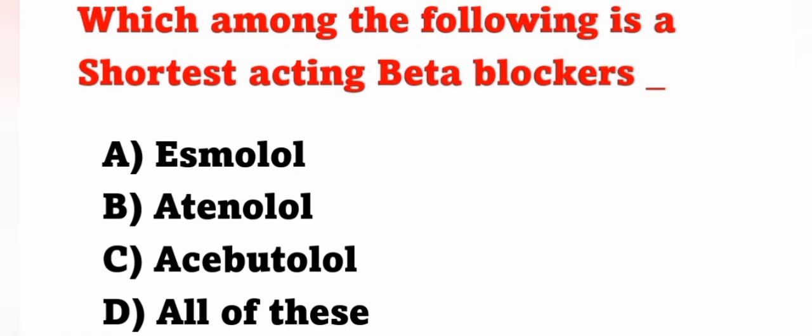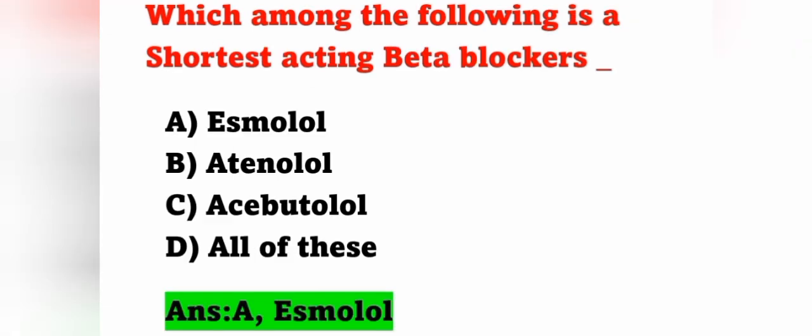Next question: which among the following is the shortest-acting beta blocker? Option A: esmolol, option B: atenolol, option C: acebutolol, option D: all of these. The correct answer is option A, esmolol. All the listed drugs are examples of beta blockers, but among them esmolol is the shortest acting.